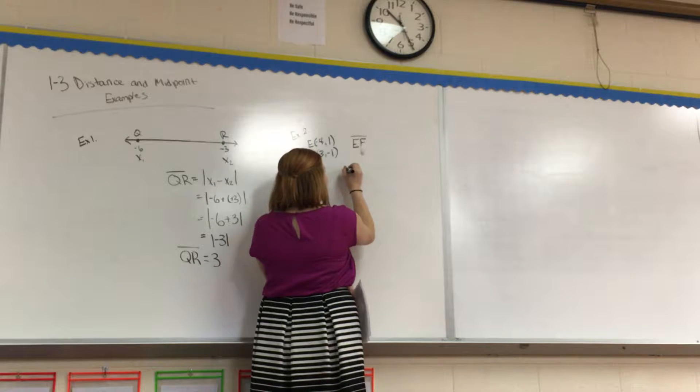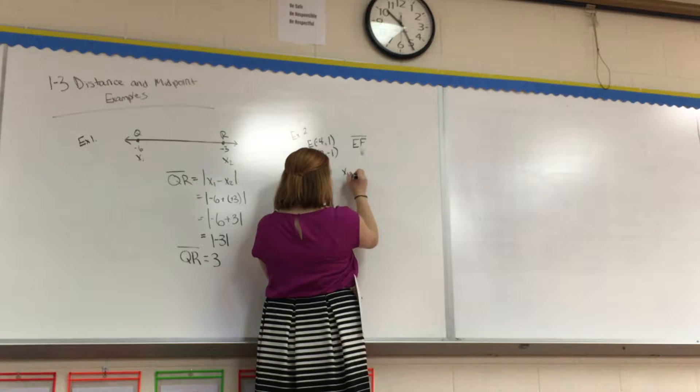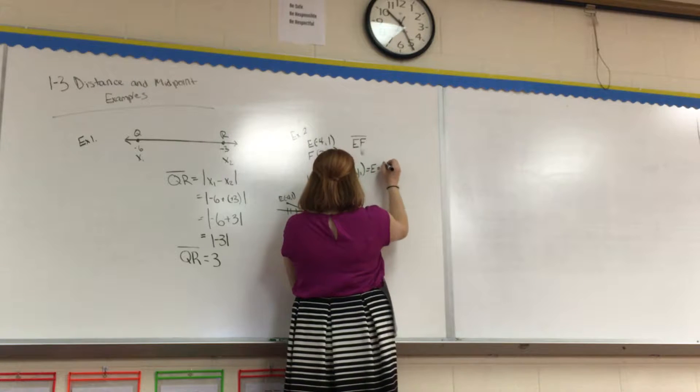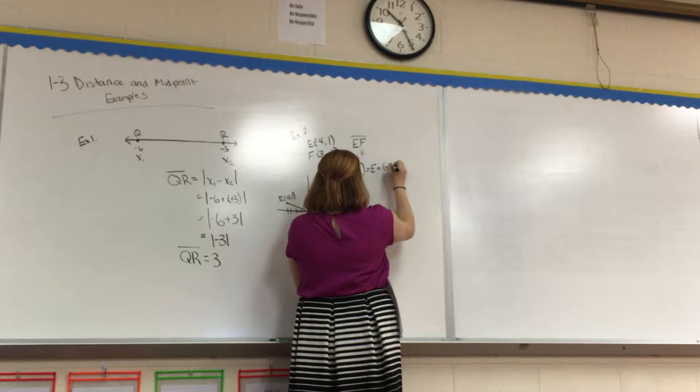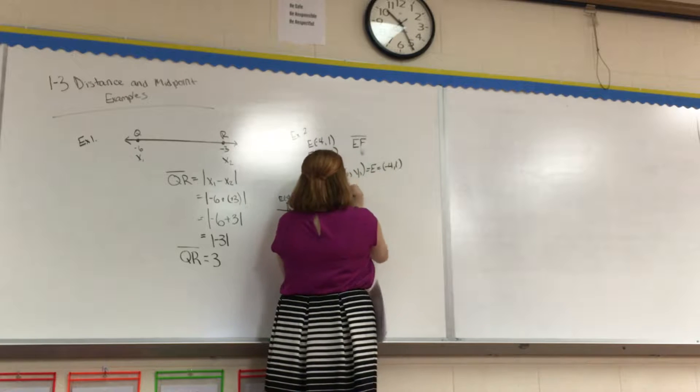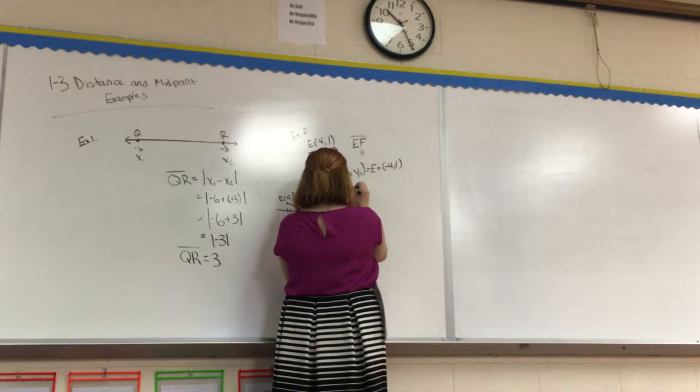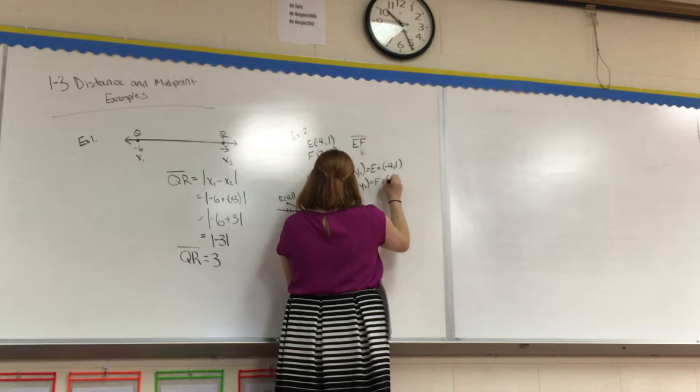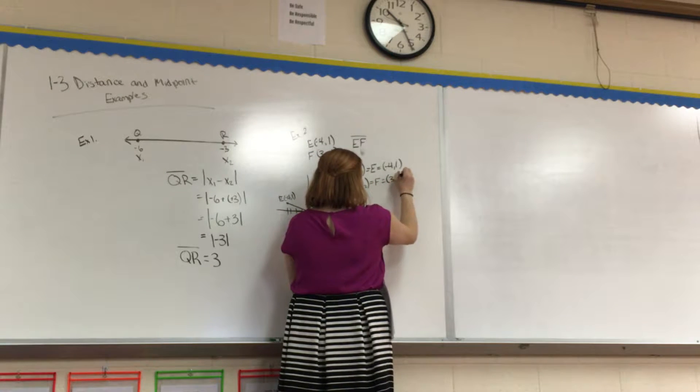We basically just have to write, we're going to make E X1, Y1. So E equals negative 4, 1. And then we're going to make F equal X2, Y2, which is equal to F, which is equal to 3, negative 1.